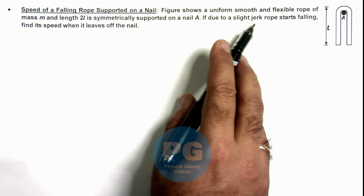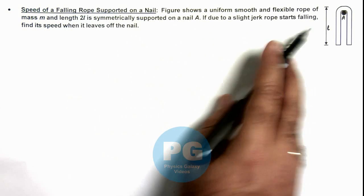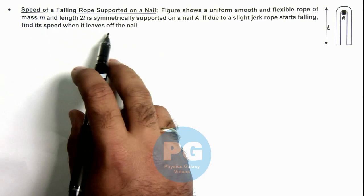If due to a slight jerk the rope starts falling, we are required to find its speed when it leaves the nail.